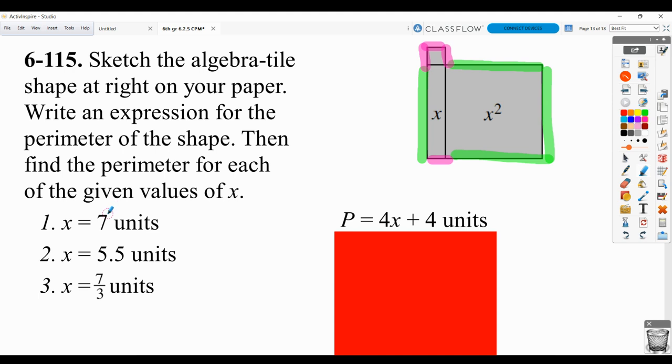Then what we're doing is we're replacing x right here with the x value they give us. So we're going to have three different answers. So I should see that you replaced x with 7. So I should see that you took 4 times 7 plus 4.